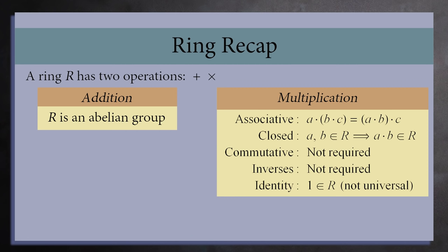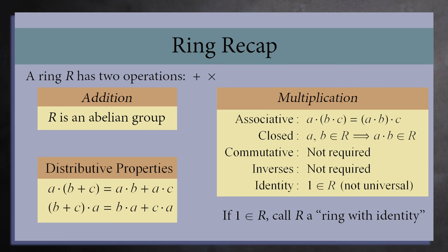Also, there is still some debate about whether a ring should be required to have an identity element 1 for multiplication. If R does have a multiplicative identity, we will call it a ring with identity to make things clear. And finally, addition and multiplication are linked by the distributive properties.